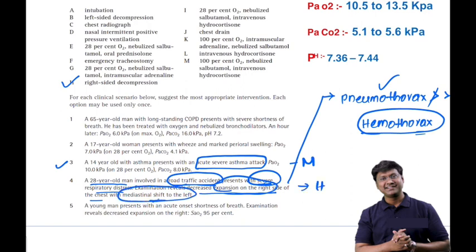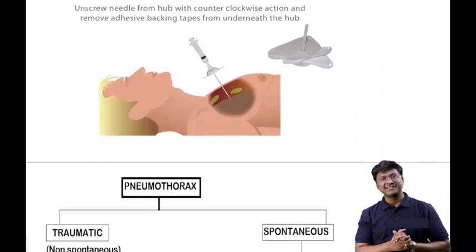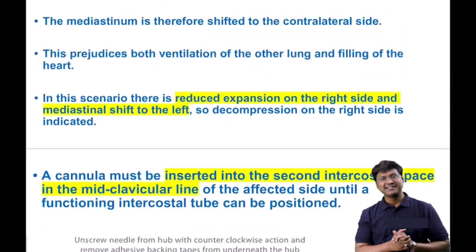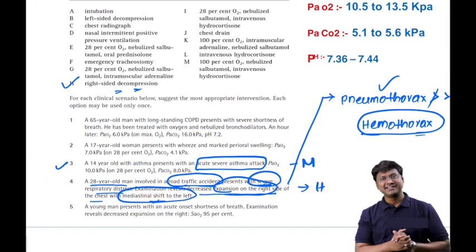Right-sided decompression is performed by inserting a wide-bore needle and puncturing the pleura at the second right intercostal space in the midclavicular line. This relieves the tension pneumothorax. If the needle puncture does not relieve respiratory distress, an intercostal drain (ICD) must be inserted. In this patient, the first-line treatment is wide-bore needle decompression; if that fails, the intercostal drain is placed.